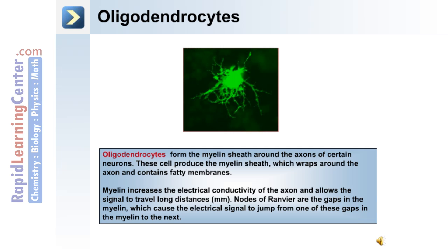Oligodendrocytes form the myelin sheath around the axons of certain neurons in the central nervous system. They produce the myelin sheath which wraps around the axon and contains fatty membranes. Myelin increases the electrical conductivity of the axon and allows the signal to travel long distances. The nodes of Ranvier are the gaps in the myelin which cause the electrical signal to jump from one gap to the next.